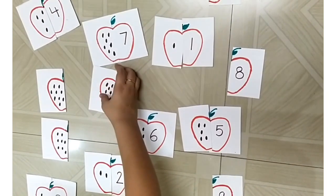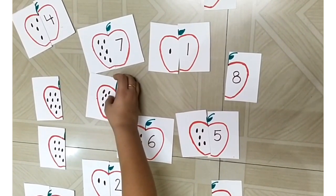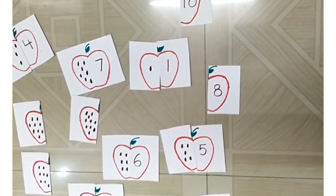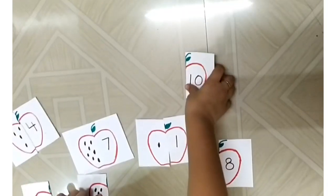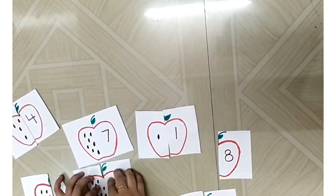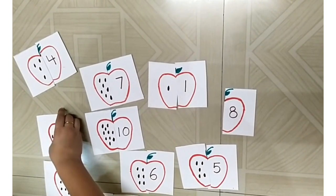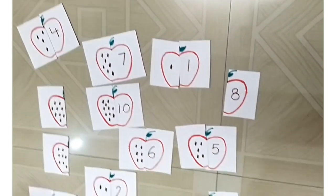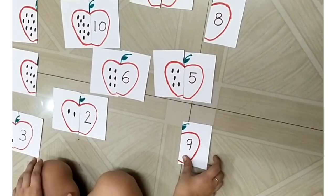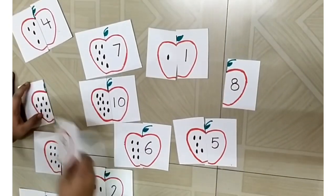One, two, three, four, five, six, seven, eight, nine, ten. Where is ten? Let's join it. One, two, three, four, five, six, seven, eight, nine. Where is nine? I found it. Let's join it.